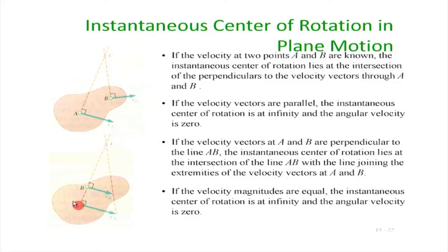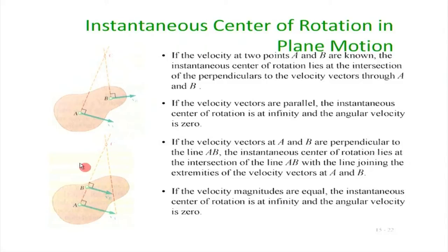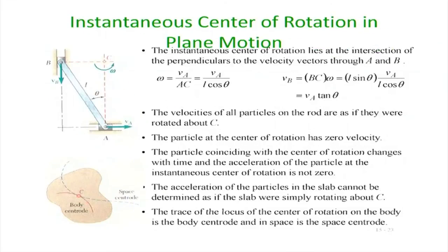In the case where two points have velocities in the same direction, the way to find the instantaneous center of rotation is: draw the velocity arrows showing magnitudes at A and B, draw perpendicular lines through both points, then join the outer tips of the velocity arrows — their intersection gives the center of rotation. The justification: the magnitude of velocity is proportional to the distance from the center, so the two triangles formed are similar triangles, with ratios of lengths satisfying this distance–velocity proportionality. C is the instantaneous center of rotation.